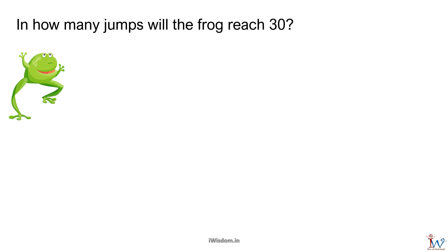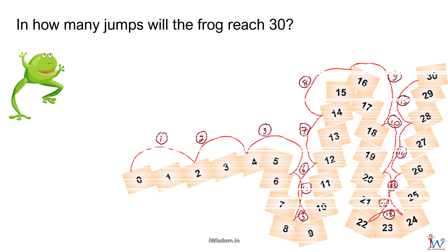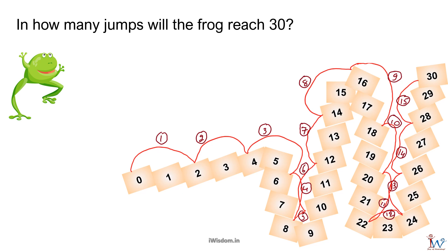In how many jumps will the frog reach 30? Every jump is a group of steps. So we can consider one jump as a group made up of steps. Number of steps in the jump become group size. We have to ask how many times 2 is 30. We know 10 times 2 is 20.